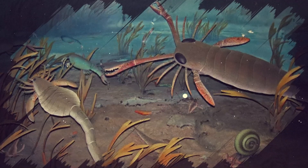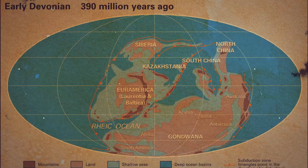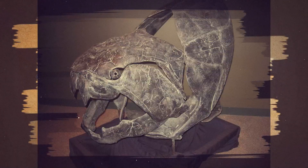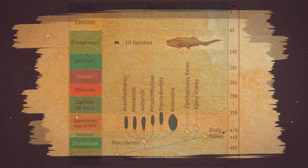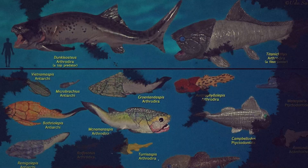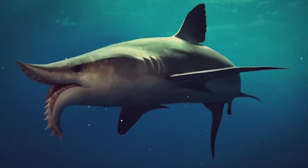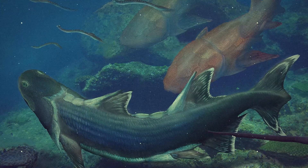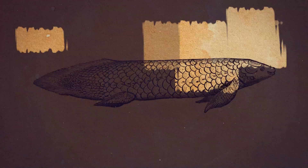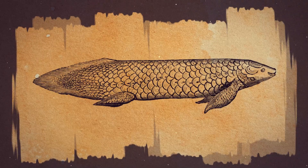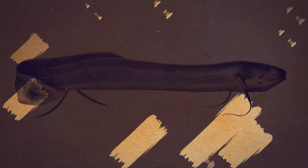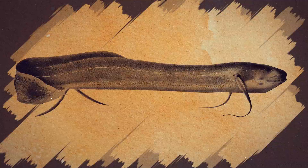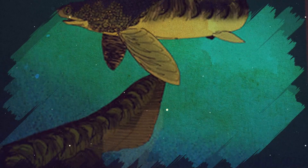This era saw significant evolutionary developments in both marine and terrestrial environments. In the seas, fish continued to diversify, building on the variety established during the Devonian period. However, the armored jawed fish known as Placoderms, which had been dominant in the Devonian, quickly became extinct at the beginning of the Mississippian stage. Cartilaginous fish like sharks and stingrays and bony fish persisted through the Carboniferous. One group, the Crosopterygians, were known for their lobe-like fins. Another group, the Dipnoi or Lungfish, had the remarkable ability to breathe air. The Paleoniscoids, smaller fish with ray-like fins, became a dominant fish group during the Carboniferous, replacing the previously dominant Crosopterygians and Dipnoi.